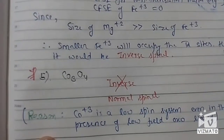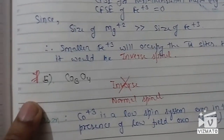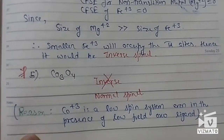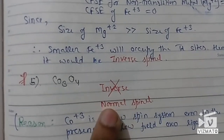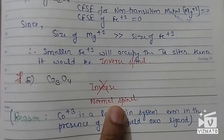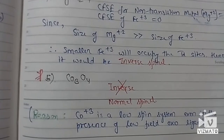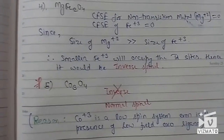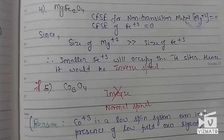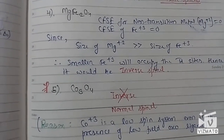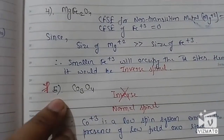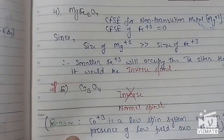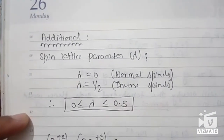The only exception to this method is Co₃O₄, which is a favorite question for both NET and GATE. When we calculate CFSE, we find it predicts an inverse spinel, but this is not the case — Co₃O₄ is a normal spinel. The reason is that cobalt in the +3 oxidation state forms low-spin complexes even with weak-field ligands, which is responsible for its exceptional behavior.